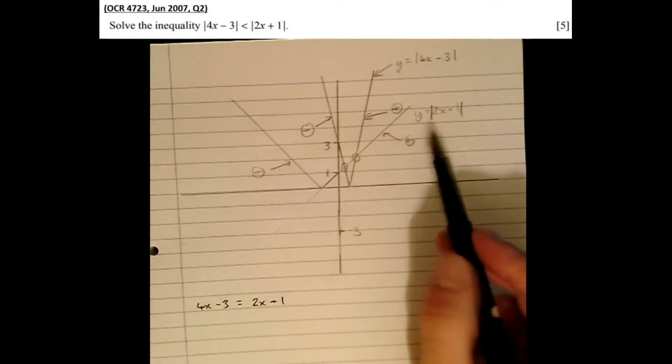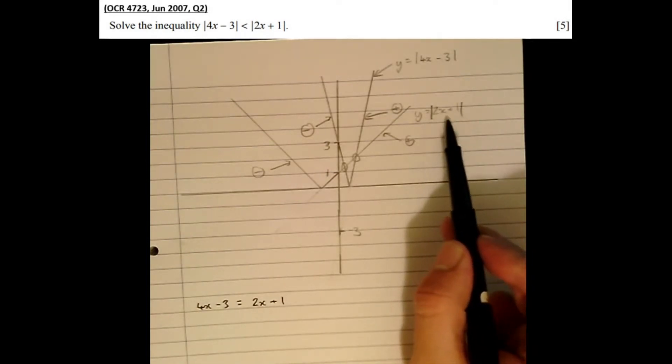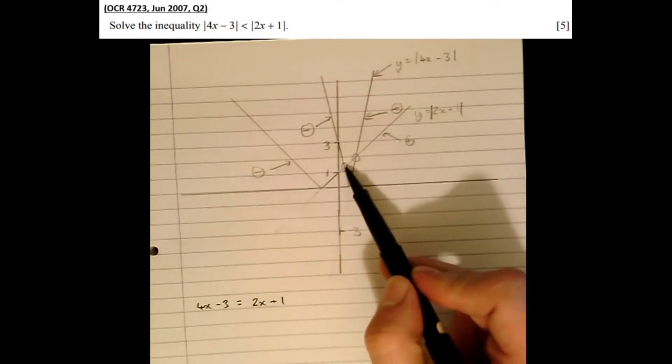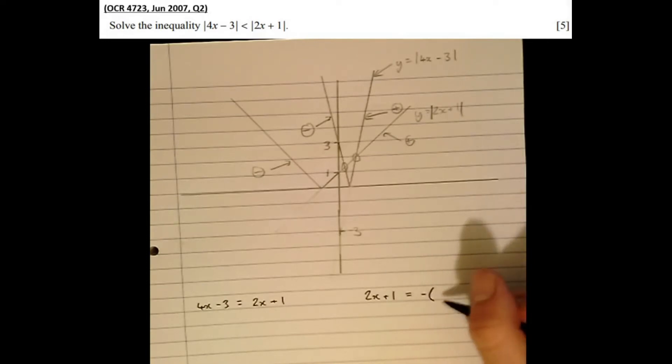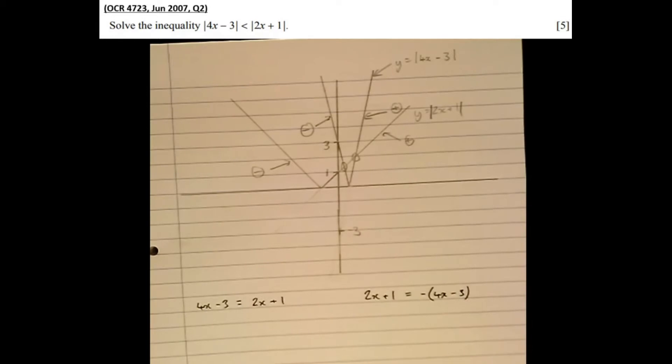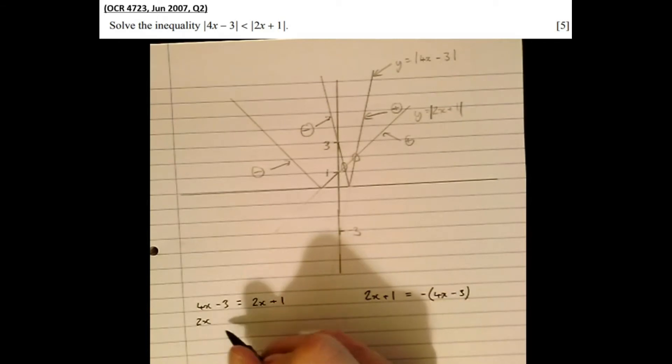The second is where the positive part of 2x plus 1 crosses the negative part of 4x minus 3. So solving the first equation: take the 2x across to that side which gives us 2x, and 3 across to that side equals 4. So x equals 4 over 2, which is 2.